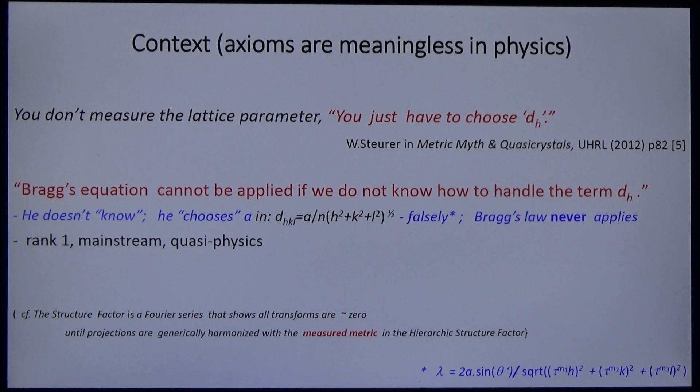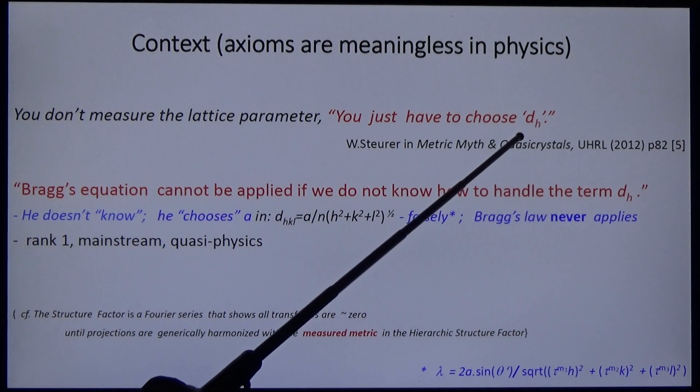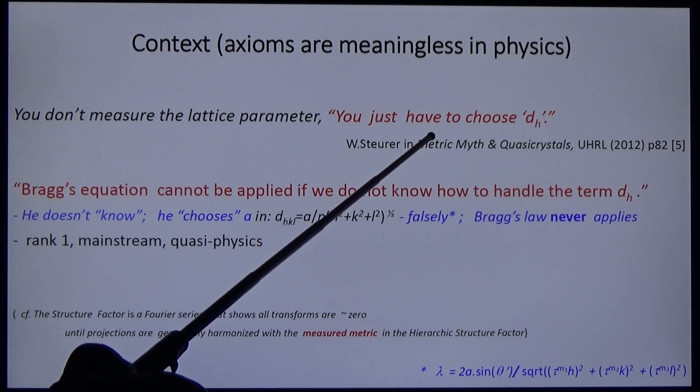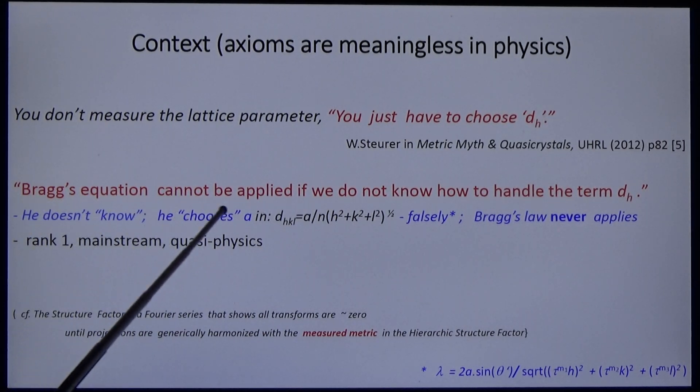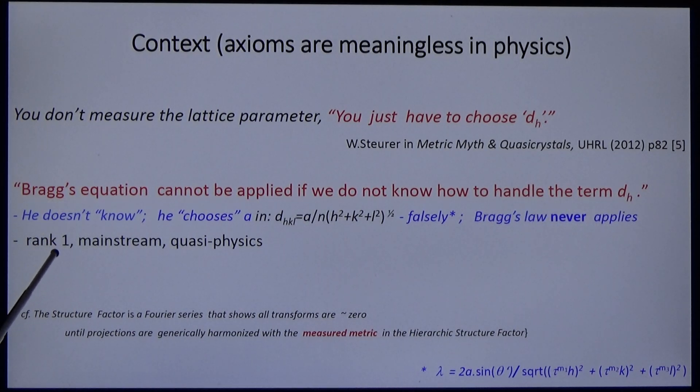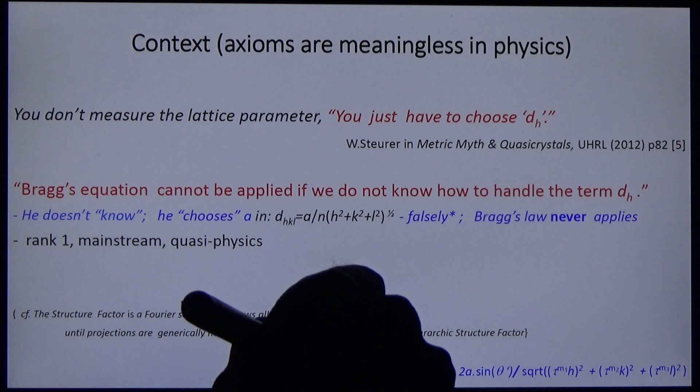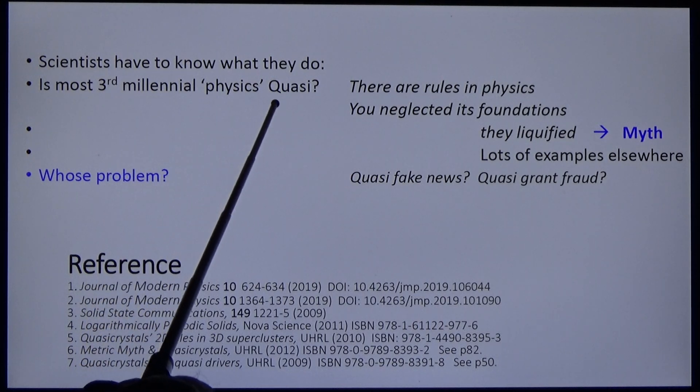I need to put this in context. The sub-editor Chris wrote, 'You don't measure the lattice parameter, you just have to choose d_H.' This is a category error. Mathematicians choose their axioms. Physicists falsify them. He went on to write, 'Bragg's equation cannot be applied if we do not know how to handle the term d_H.' Well, he doesn't know. He chooses A falsely, and Bragg's law never applies. His is rank one mainstream quasi-physics. What else is quasi? Scientists have to know what they do. Is most third millennial physics quasi?